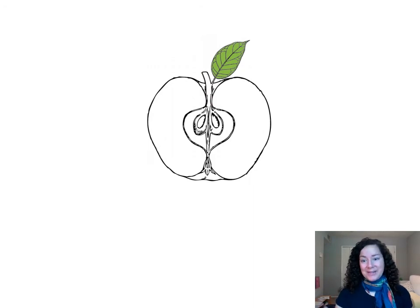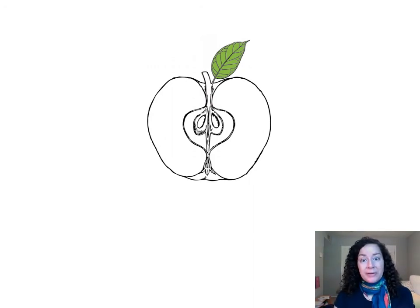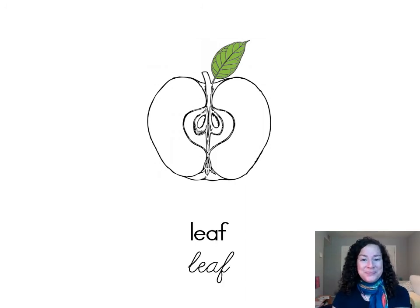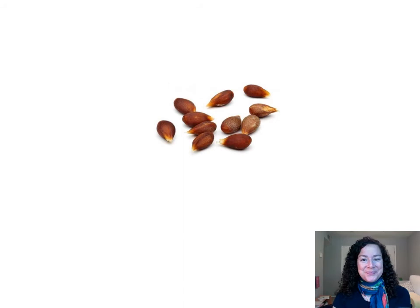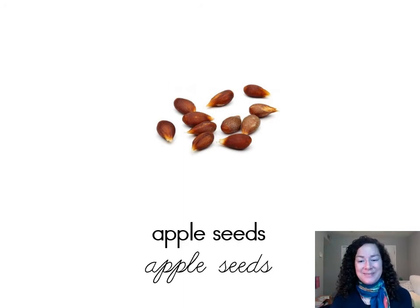Part of the flower — flowers are usually right next to some leaves — and so this is a leaf. We had seen these before. This is a closer shot of those apple seeds.